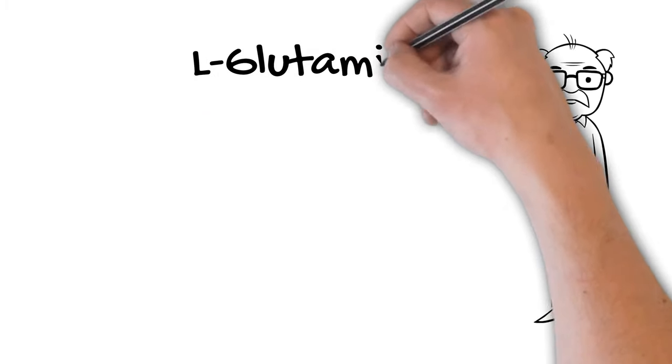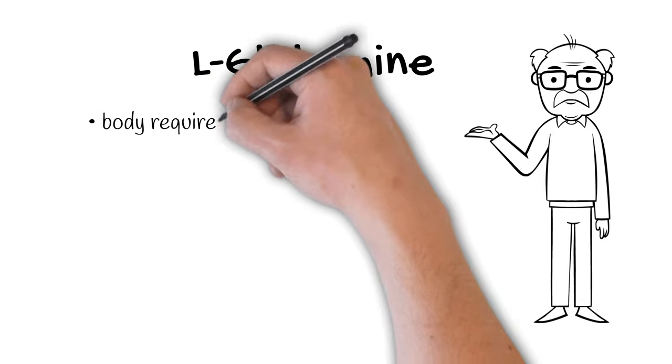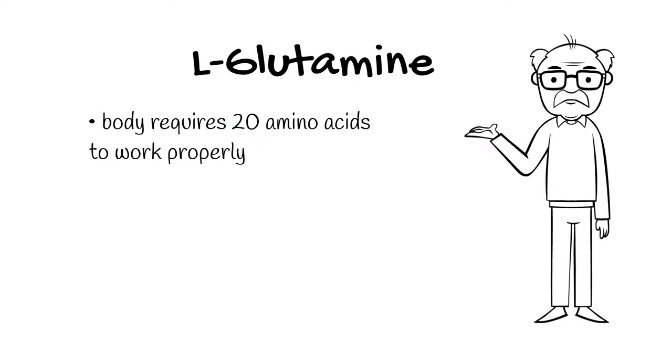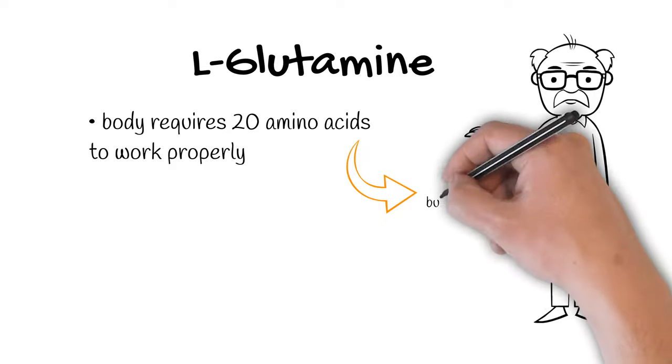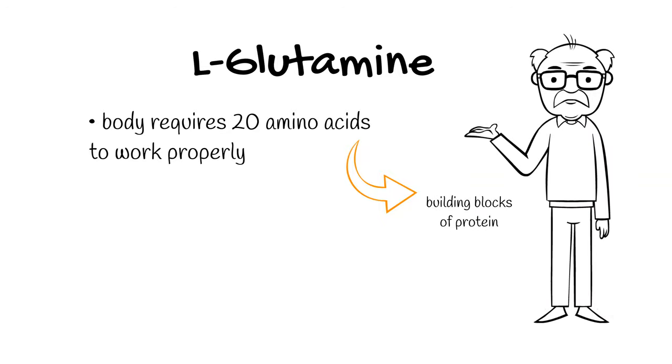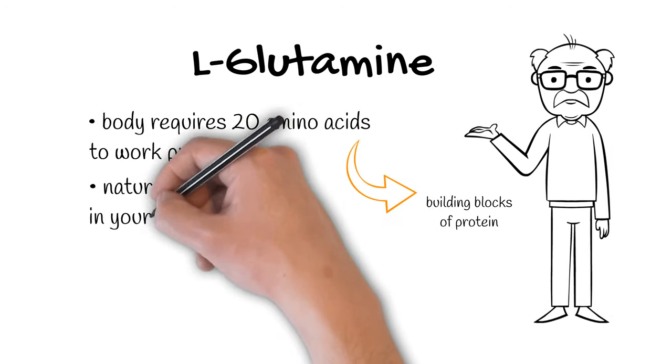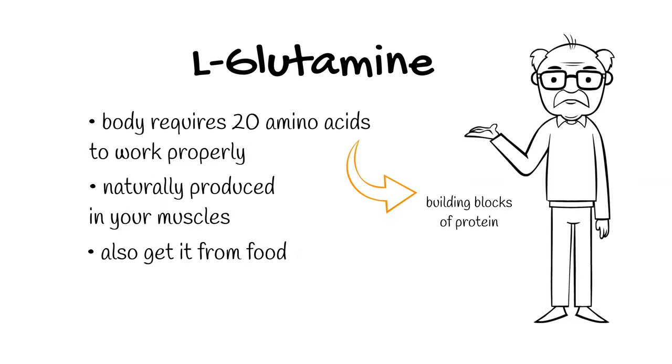Today in this video we're gonna talk about L-glutamine. Now the body requires about 20 essential or non-essential amino acids to work properly, as they are the building blocks of protein. Now glutamine, being a non-essential amino acid, is naturally produced in your muscles but it can also be found in many different foods.